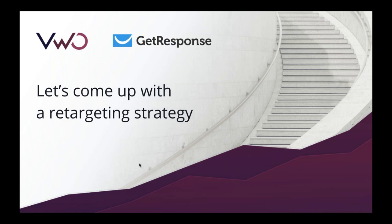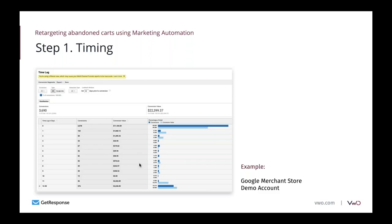First of all, you have to consider timing — this is probably the most important element. Whenever you're sending your email retargeting campaign, you have to make sure it's spot on time. Looking at the timeline report in Google Analytics, consider whether the first conversion happens on the same day or further down in time. If it's taking them longer, your email communication doesn't have to go out straight away. For example, after 12 to 30 days there's still a big percentage of people converting, so your retargeting can be timed over a longer period.